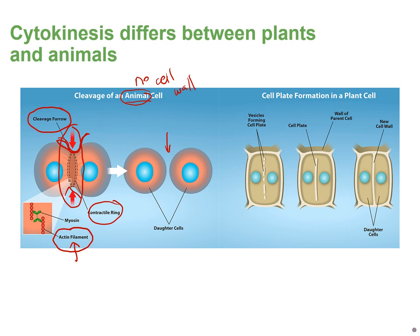In plant cells, a new cell wall must form between the daughter cells. During interphase, the Golgi apparatus makes vesicles full of enzymes, proteins, and sugars. During telophase, right before cytokinesis, these vesicles move toward the center of the cell, fuse together, and ultimately form a structure called the cell plate — the precursor to the new cell wall. More vesicles fuse until the full cell wall is formed.